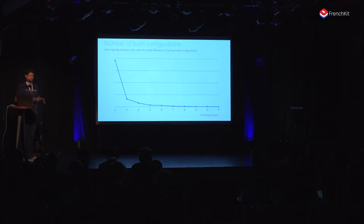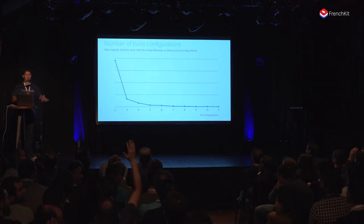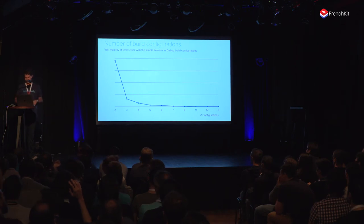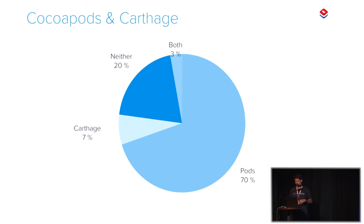At the risk of starting a flame war — how many of you think CocoaPods is the best dependency management system? It's a safe zone, you can tell. I was expecting a lot more hands, but most people are using CocoaPods — 70% — and Carthage is only 7%. We actually have more people using no solution at all — probably git submodules or just sticking the code in the repository — than people using Carthage.